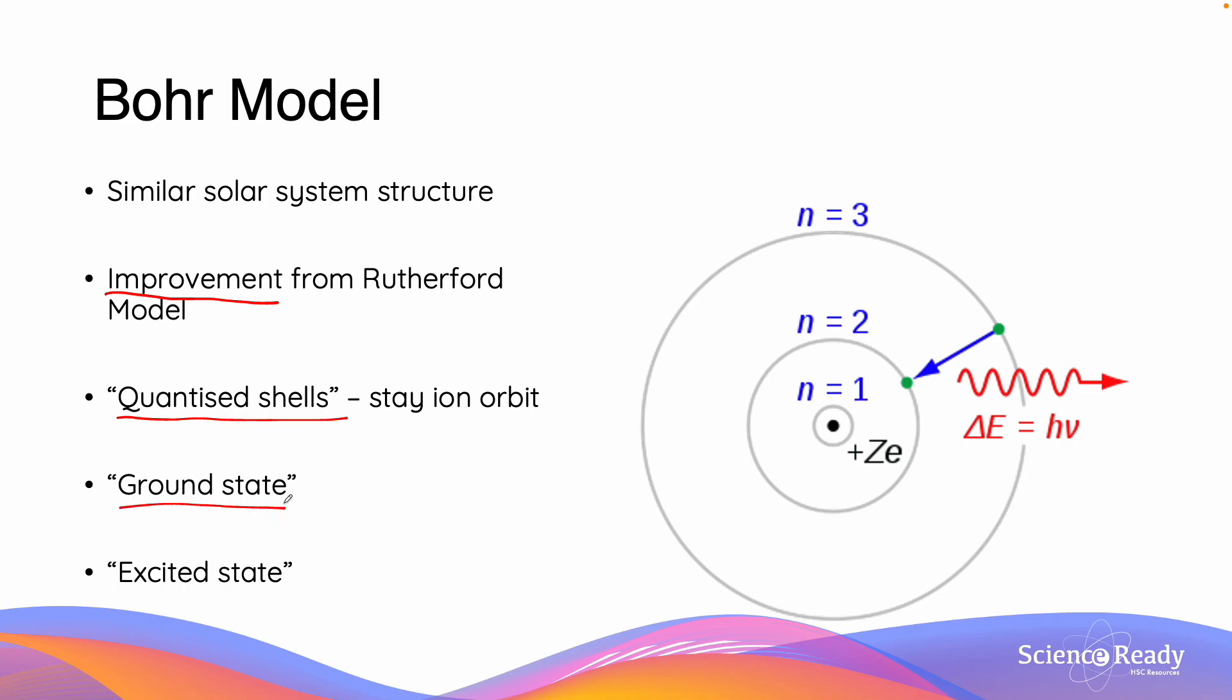Now electrons can either be described as being in the ground state or in the excited state. Electrons which are in the ground state are in their lowest possible energy states. So for example, if an electron was in shell 1, its ground state might be 1. If an electron naturally exists in n equals 2, n equals 2 would be its ground state.